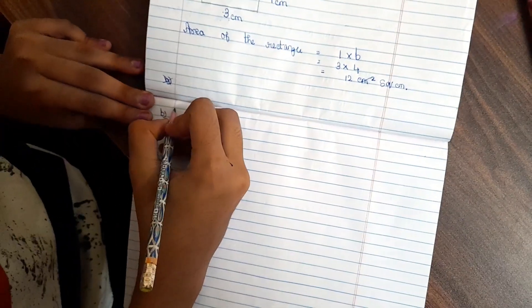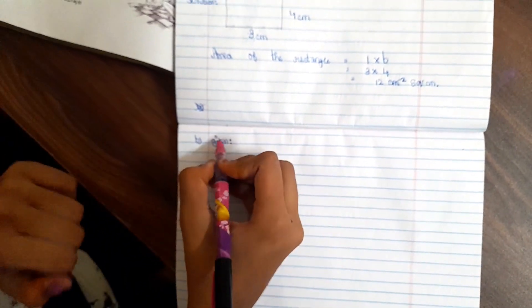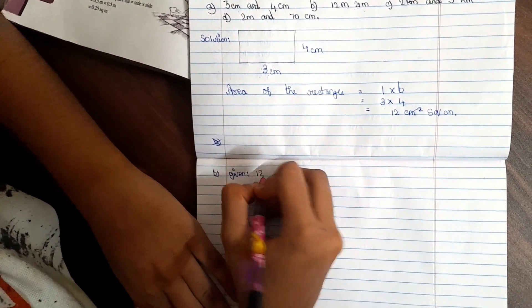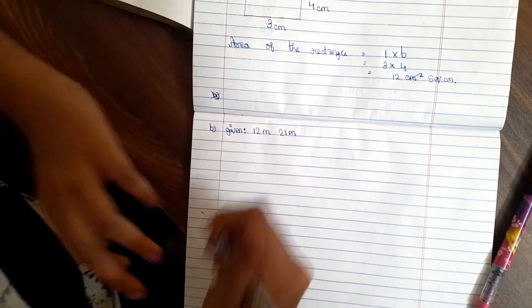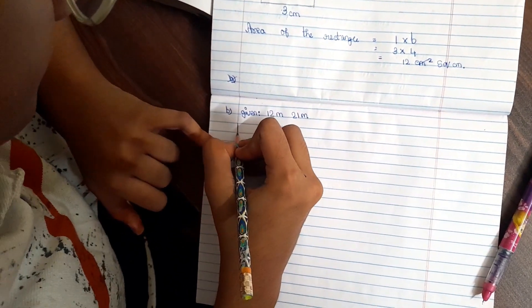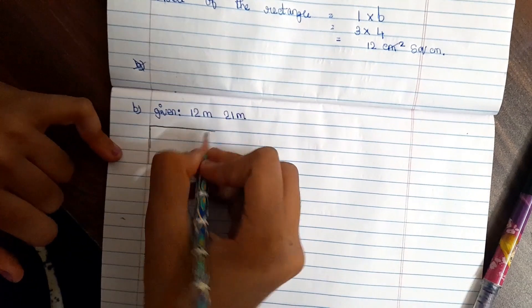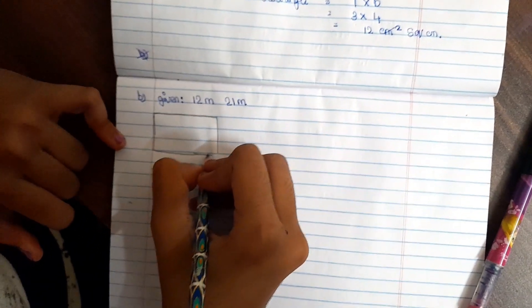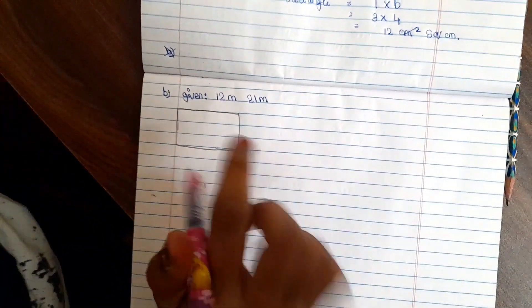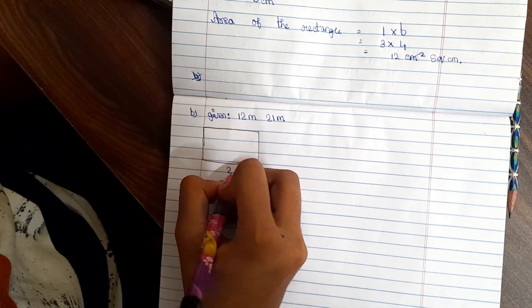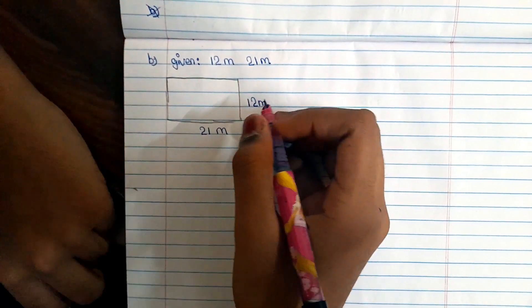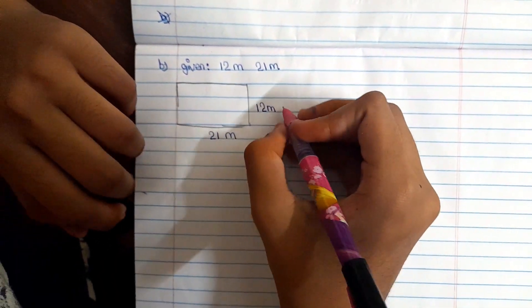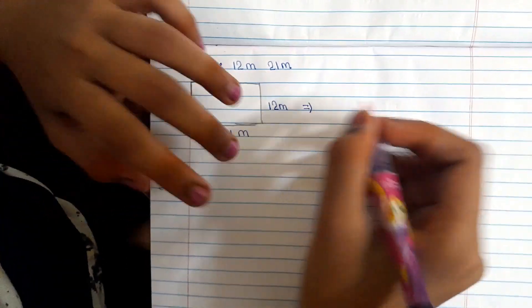Next sum given is 12 meter, 21 meter. Now I am writing given: 12 meter, 21 meter. Now we want to draw a rectangle. We want to write the length, 21 meter. Breadth is 12 meter. Length and breadth I am taking randomly. Now we are going to solve this problem.